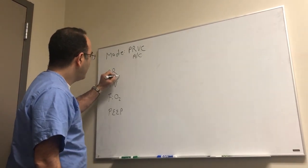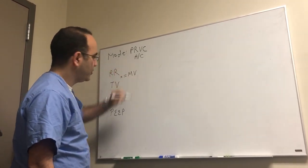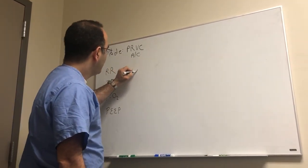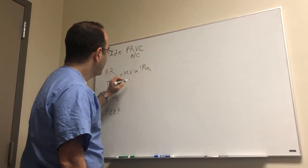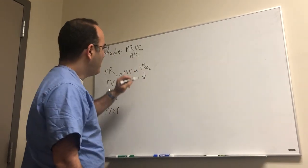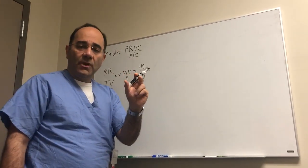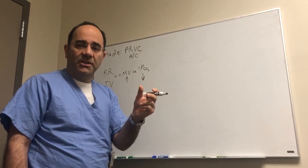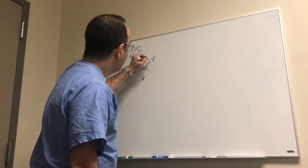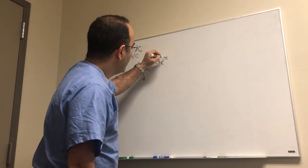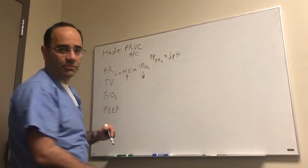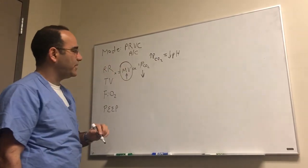Remember that respiratory rate times tidal volume equals the minute ventilation. This minute ventilation is inversely proportional to the PCO2. In other words, as the minute ventilation goes up, the PCO2 goes down. Remember that PCO2 is related to the pH. As PCO2 starts to go up, the pH will start to go down. So an increase in PCO2 results in a decrease in pH, or a respiratory acidosis.